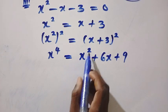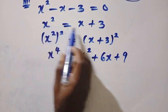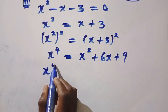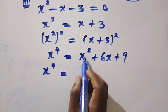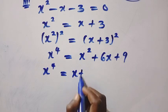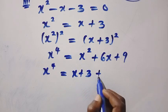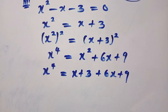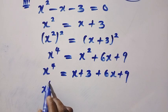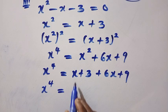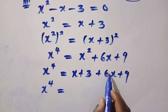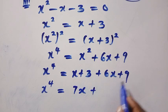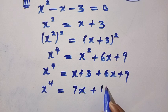Again, x squared is given as x plus 3. By replacing this, we have x to the power of 4 equals, instead of x squared, we change this to x plus 3 plus 6x plus 9. And then we have x to the power of 4 equals x plus 6x, which gives us 7x plus 3 plus 9, that is 12.